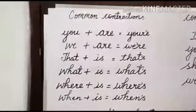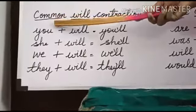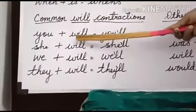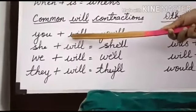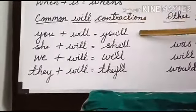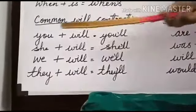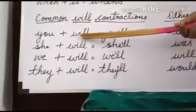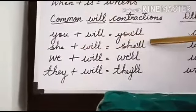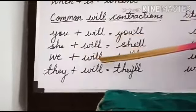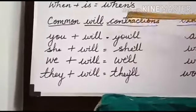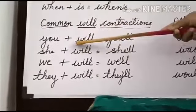Now let us see some common 'will' contractions. In these, you have to remove the letters 'w' and 'i' and place an apostrophe to make the contracted word. For example: 'you' plus 'will' = 'you'll', 'she' plus 'will' = 'she'll', 'we' plus 'will' = 'we'll', 'they' plus 'will' = 'they'll'. The 'w' and 'i' are removed and an apostrophe is placed to form the contracted word.